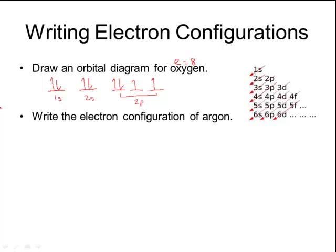Number 2, write the electron configuration for argon. Alright, so again, the first thing I need to do is figure out how many electrons. So I find argon on my periodic table. I see that argon has an atomic number of 18, and the number of protons and electrons are always equal for an atom, so the number of electrons here will be 18.